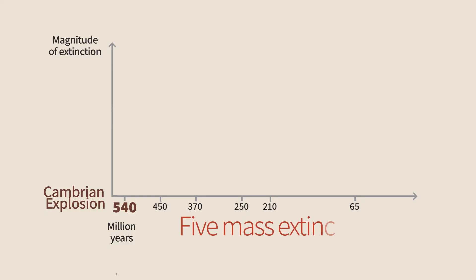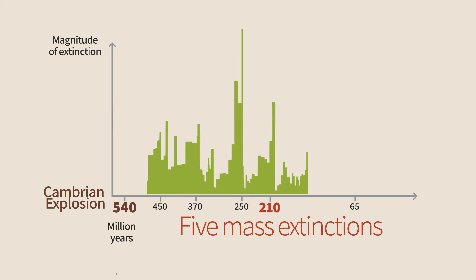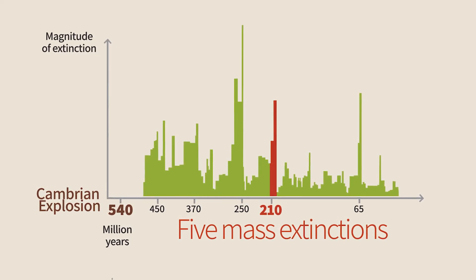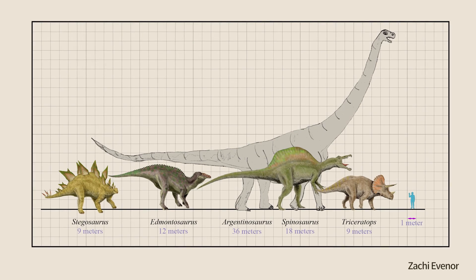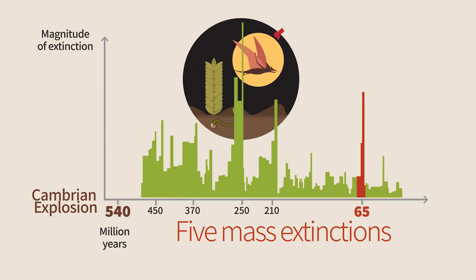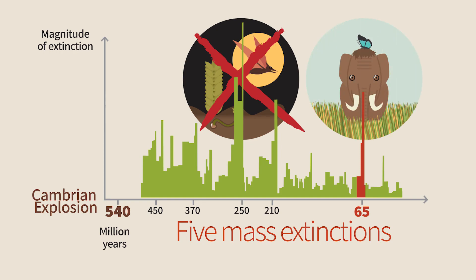The ammonite fossils I find on almost every hike are a permanent reminder of the fragility of life on Earth, and how easy it is to cause a huge and successful clade to become extinct. Each mass extinction was followed by a recovery period and by the appearance of more complex creatures. For example, the mass extinction that took place 210 million years ago enabled the dinosaurs to thrive, and in turn, the extinction 65 million years ago enabled the rise of mammals.